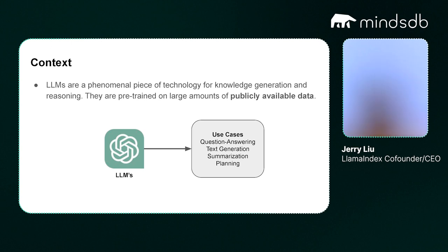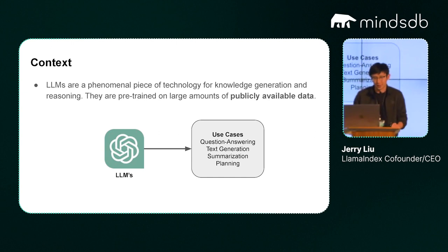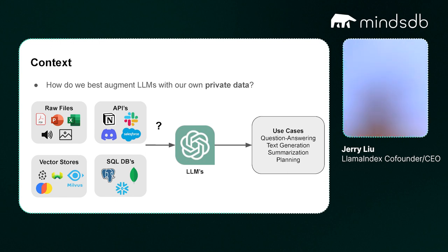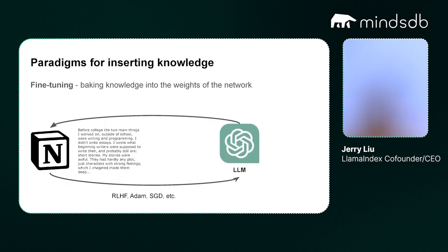LLMs are great. They're pre-trained on a lot of data and can be used for a lot of different types of use cases. Pretty much everybody building an app thinks about how do you augment LLMs with your own private data — raw files like PDFs, vector databases, APIs, et cetera. There are basically two classes of techniques you could do, and the jury's still out on what the long term will look like. One is fine-tuning: how do you actually bake knowledge into the weights of the network? You train the model on new data and the model will memorize stuff.